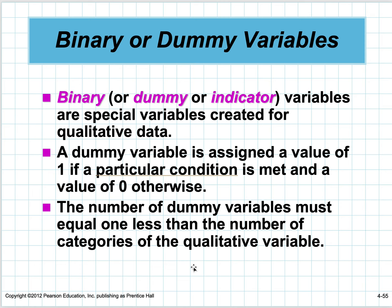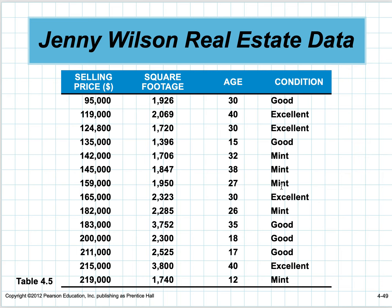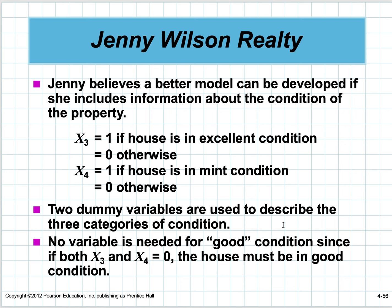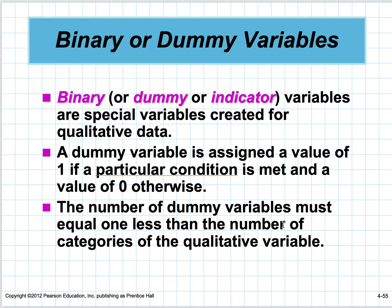The next thing we do is add a binary or dummy or indicator variable. Condition—mint, good, excellent—is not numerical, and all these calculations are done numerically. A dummy variable is assigned a value of one if a particular condition is met, zero otherwise. The number of dummy variables must equal one less than the number of categories.